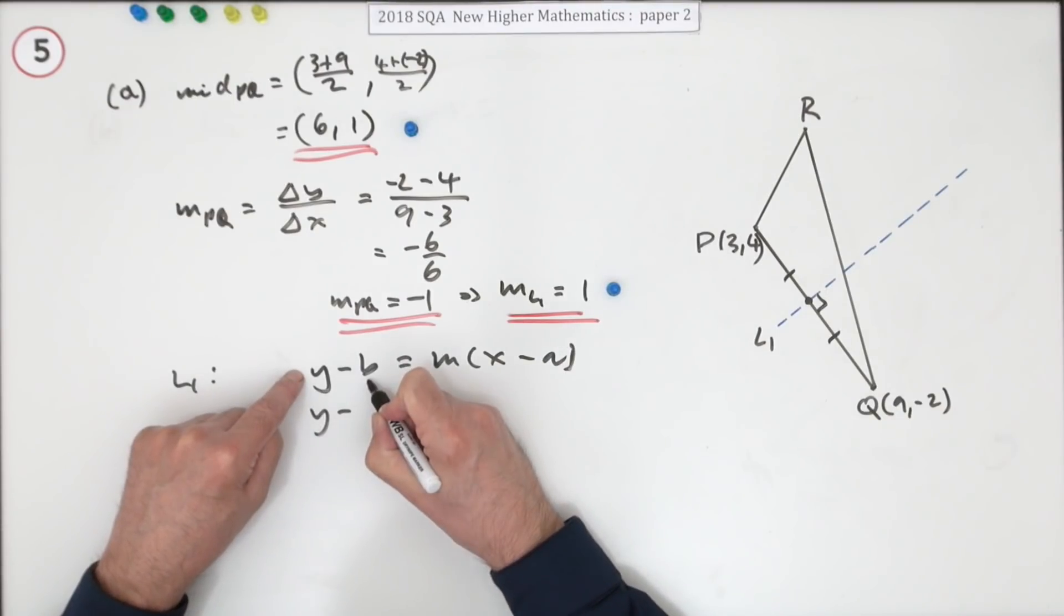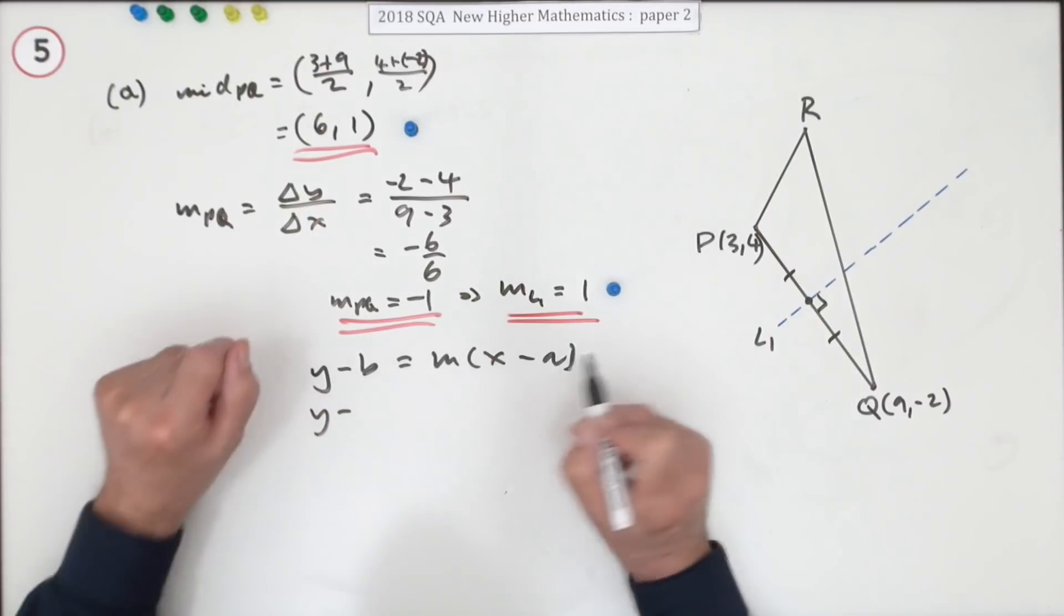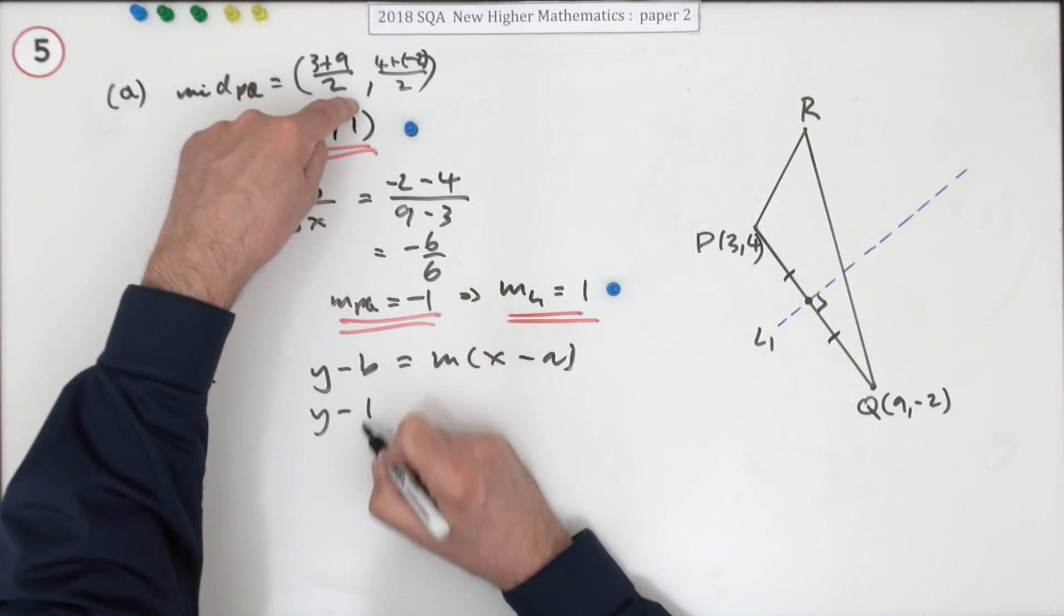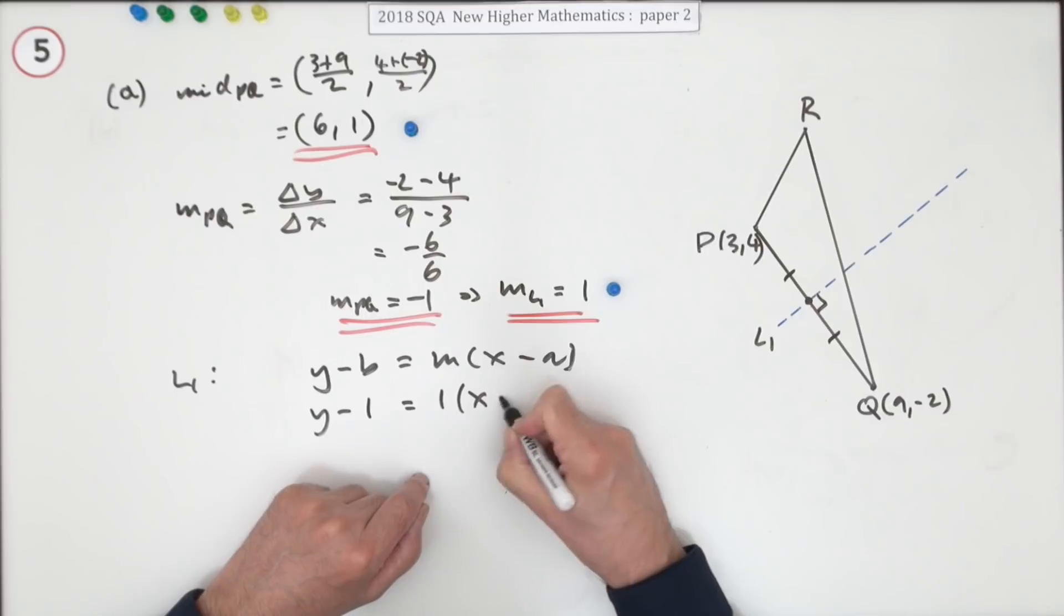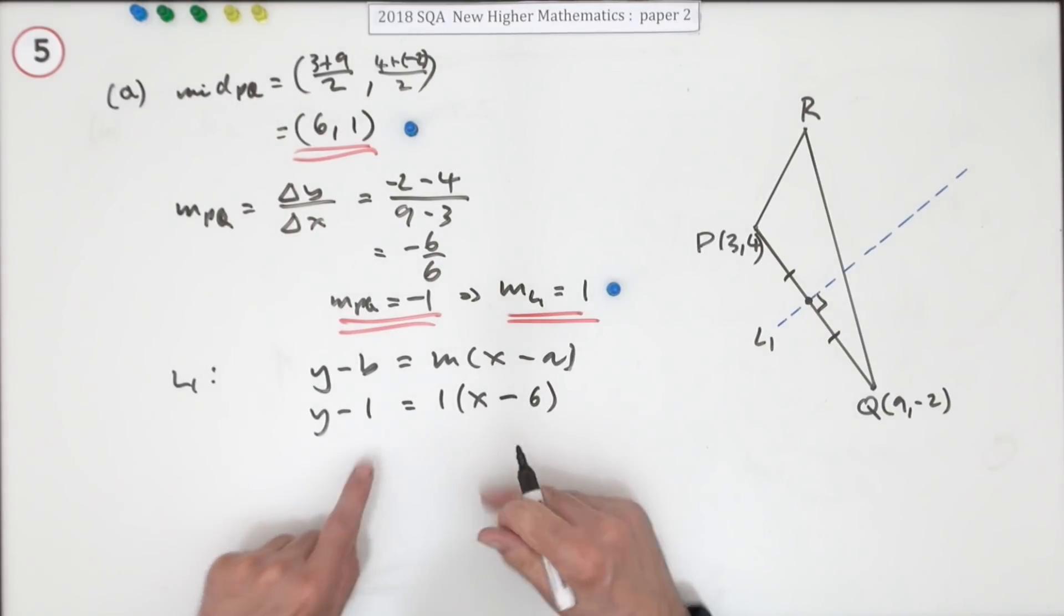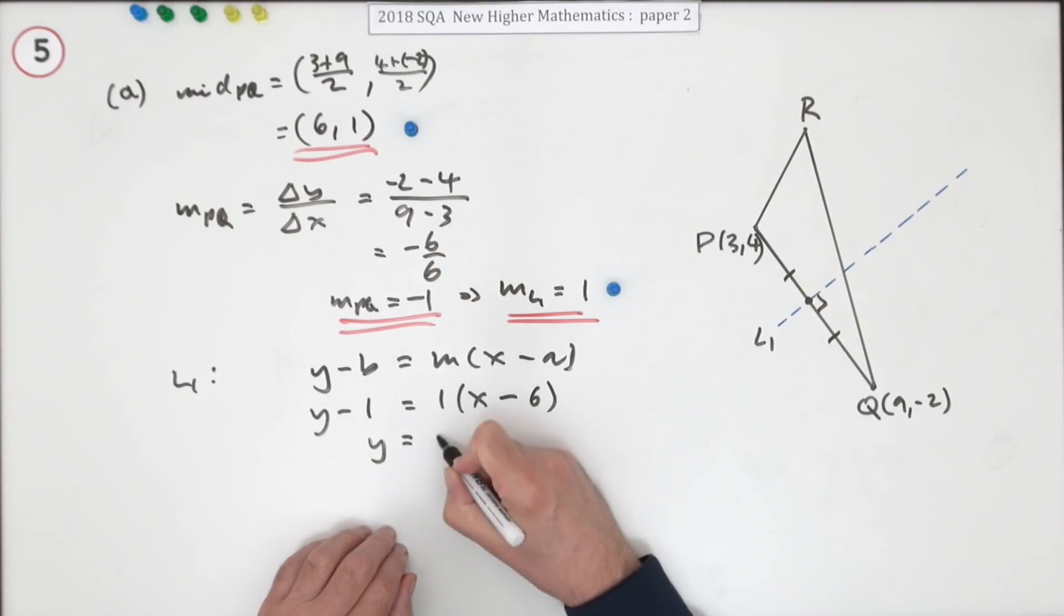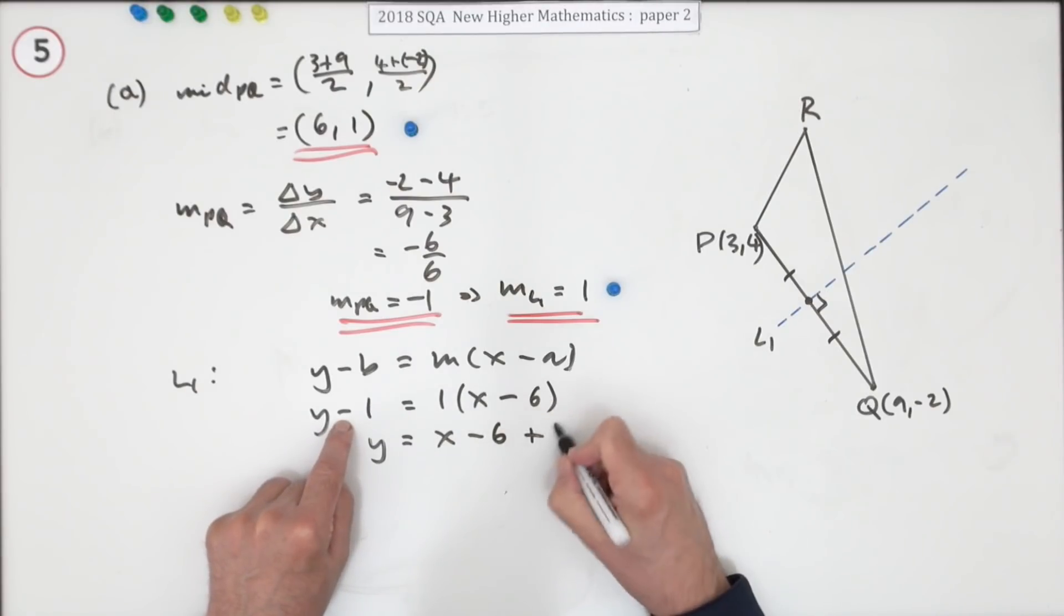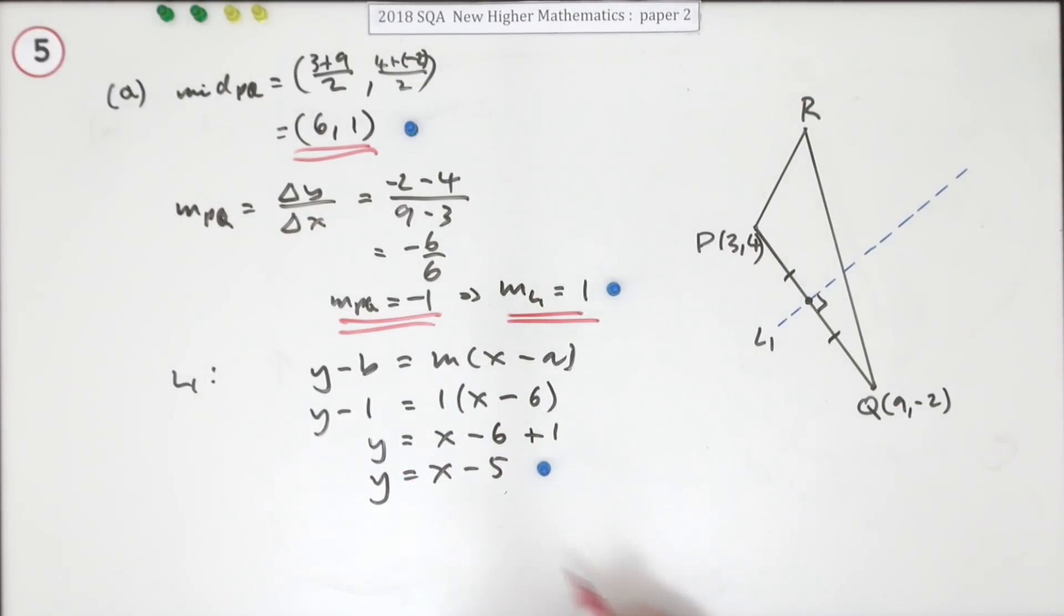So y minus the y coordinate. Go in pairs, because it's a gradient after all. Gradient is the difference in the y's divided by the difference in the x's. Y minus the y coordinate of the point, the point on the line, not any of the others. It's the gradient, the gradient of the line times x minus the x coordinate which is 6. Now don't leave it as y minus 1 is x minus 6. You won't get the mark. You need to tidy it up. So y would be x minus the 6 plus the 1. Y equals x minus 5. Now you get the mark. Or you can rearrange that into any form you like by putting various number of terms on either side.